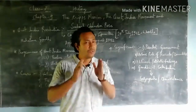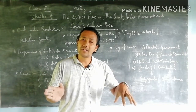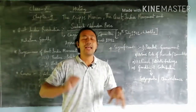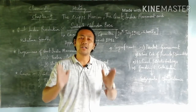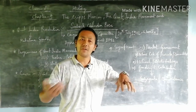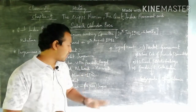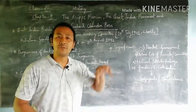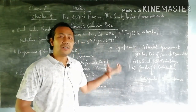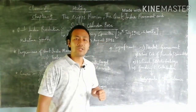The third cause is the communal problem, which mainly started from 1905. When Lord Curzon partitioned Bengal, dividing it into East Bengal with its capital at Dacca and West Bengal with its capital at Calcutta, communal tensions arose between Hindus and Muslims. From 1906, the All India Muslim League was formed in December 1906, further deepening communal divisions between Congress and the League, which became a key cause giving rise to the Quit India Movement.